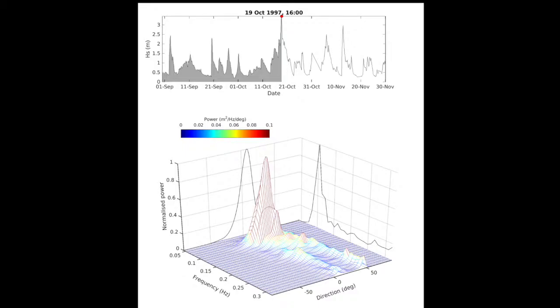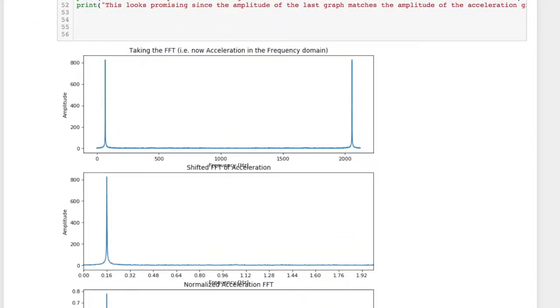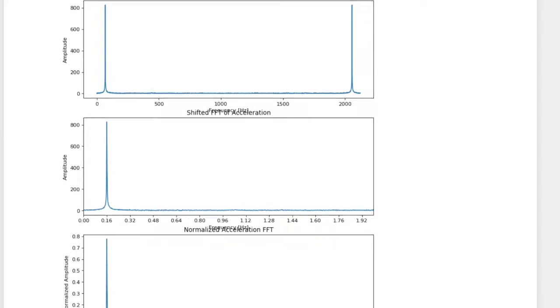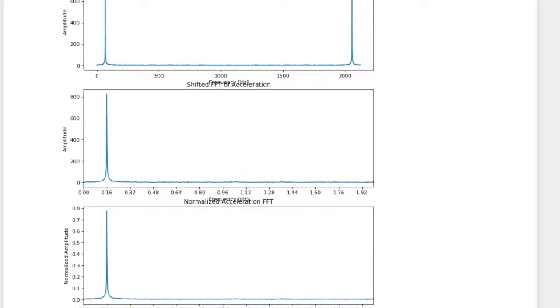The second method is called spectral analysis. Spectral analysis differs from wave train analysis in that we look at the entire signal as a whole, rather than at individual waves. In spectral analysis, we convert the time-based acceleration signal into frequency domain-based displacement signals using the fast Fourier transform. We can then find the peak frequency present in the signal to determine the wave period.